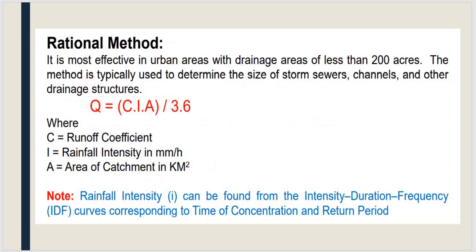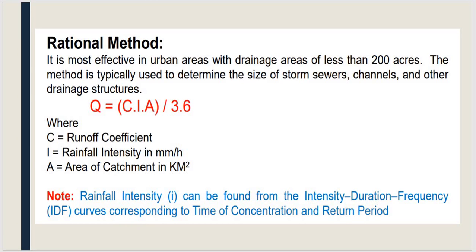The next method is the rational method, which is very effective in urban areas with a drainage area of less than 200 acres. The formula is Q = CIA / 3.6, where C is the runoff coefficient, I is the rainfall intensity, and A is the area of the catchment.